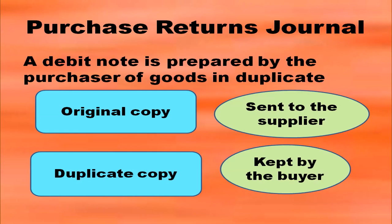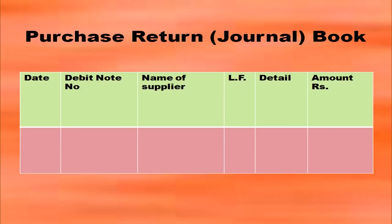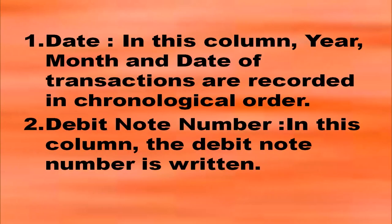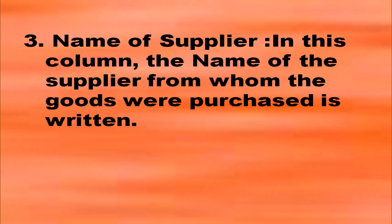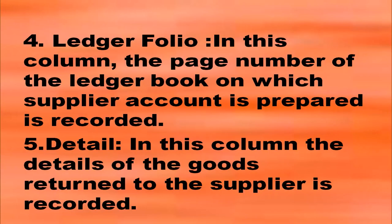The original copy of the debit note is sent to the supplier and the duplicate copy is kept by the buyer. Purchase returns journal also has a format with date, debit note number, name of supplier, ledger folio column, details and amount column. In the date column, year, month and date of transactions are recorded in chronological order. Debit note number is written in the debit note number column. Name of the supplier from whom the goods were purchased is written in the third column. The page number of the ledger book is recorded in the ledger folio column. Details of goods returned are recorded in the details column, and the total amount of goods returned is written in the amount column.